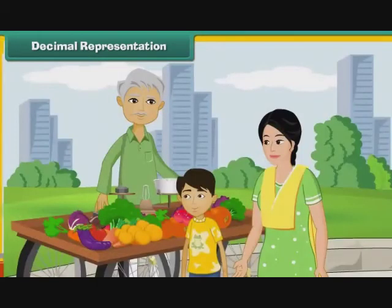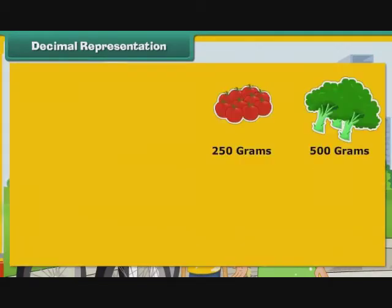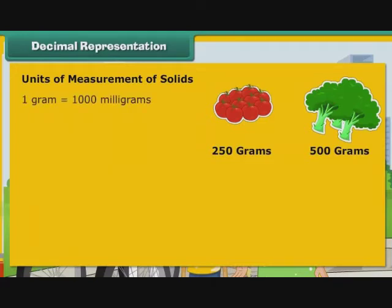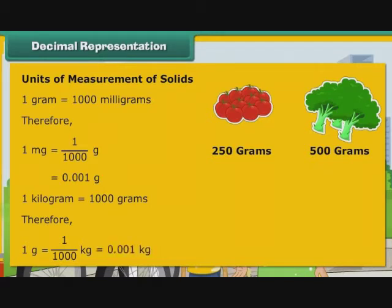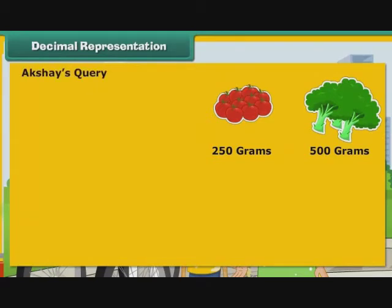Akshay accompanied his mother to the vegetable market. There, he saw his mother buy 250 g and 500 g of different vegetables. He wanted to express the quantities purchased as kilograms. Akshay must first understand the units used to measure quantities of solids. 1 gram is equal to 1000 mg. Therefore, 1 mg is equal to 1 by 1000 gram, that is equal to 0.001 gram. 1 kilogram is equal to 1000 grams. Therefore, 1 gram is equal to 1 by 1000 kg, that is equal to 0.001 kg.